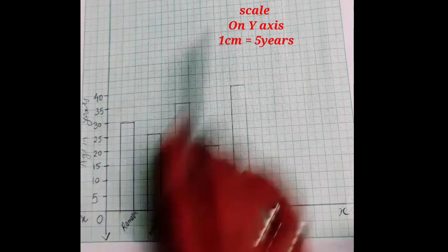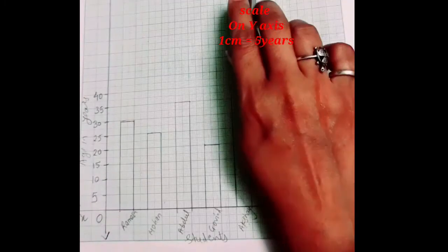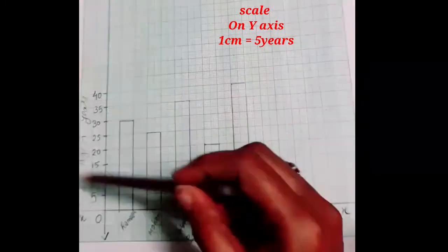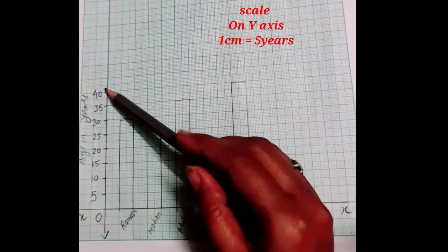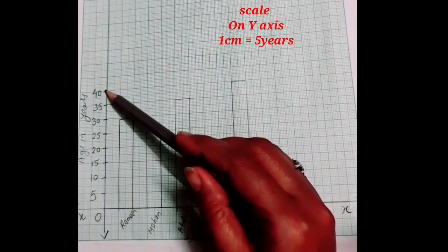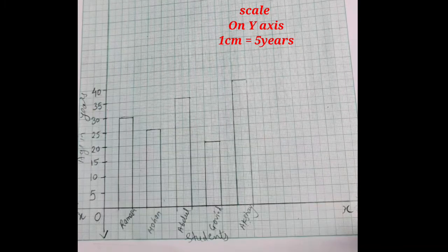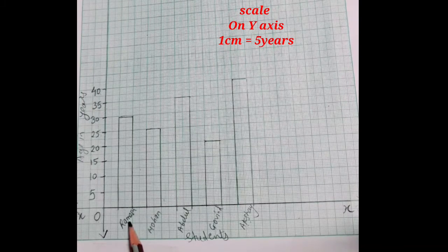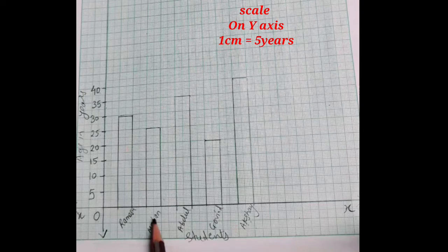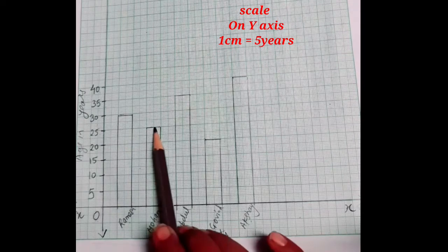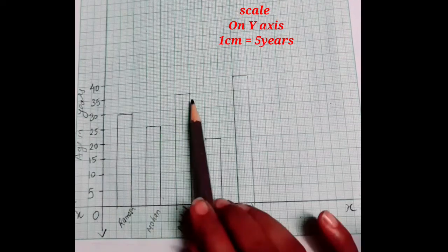So student, here we have drawn the bar graph of 5 students. Age are given in the years. The scale was given. On y axis 1 cm equal to 5 years. So we have taken the table of 5. The maximum age is given 40. So we have taken till 40.